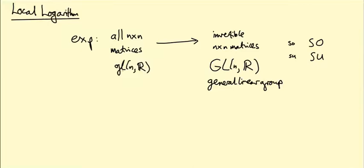That's the reason for this weird notation. This is just how we write the exponential map. It goes from little g, L, N, R to big G, L, N, R.